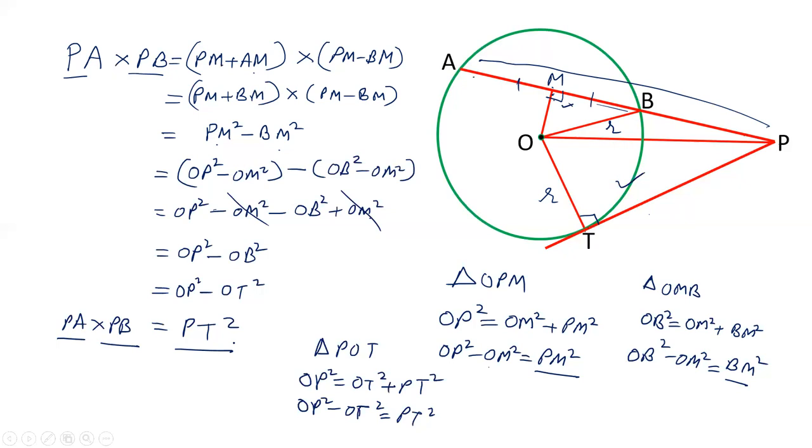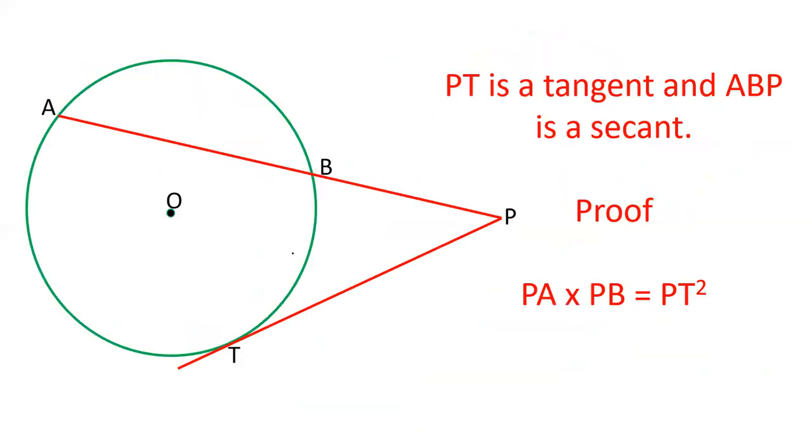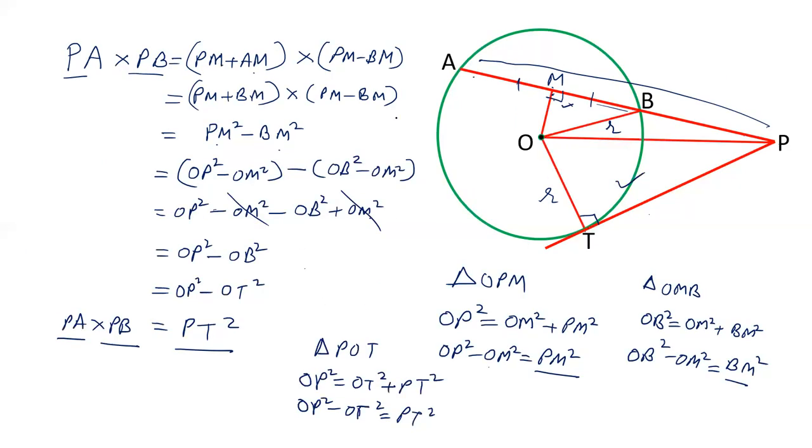So friends, remember this property in a circle that if there is a circle and tangent PT is drawn and ABP is a secant, then PA into PB will always be equals to PT squared. I hope friends you like this video. Please like our video and subscribe to our channel.